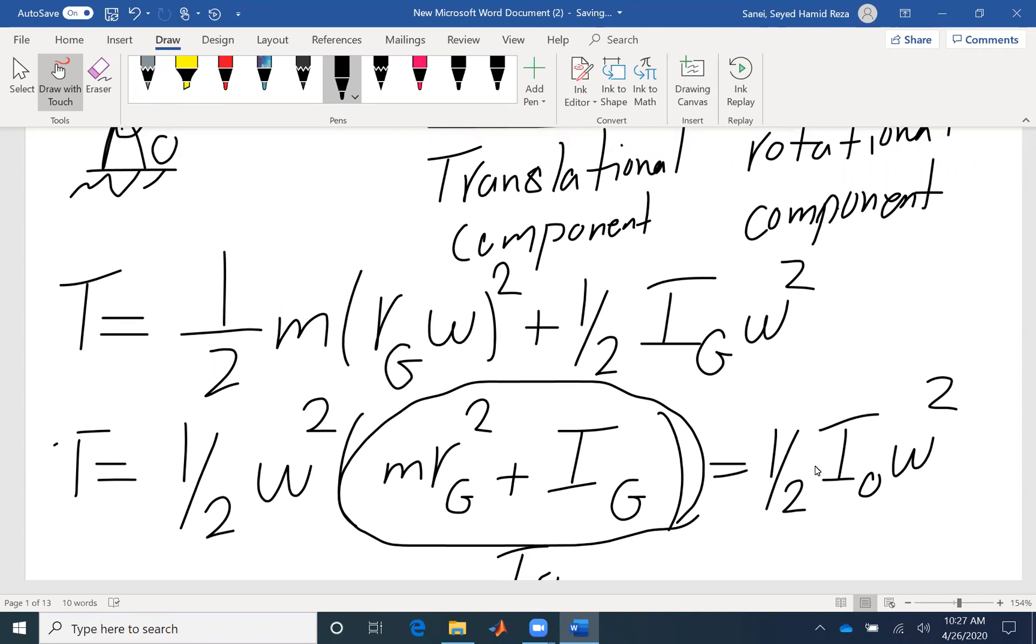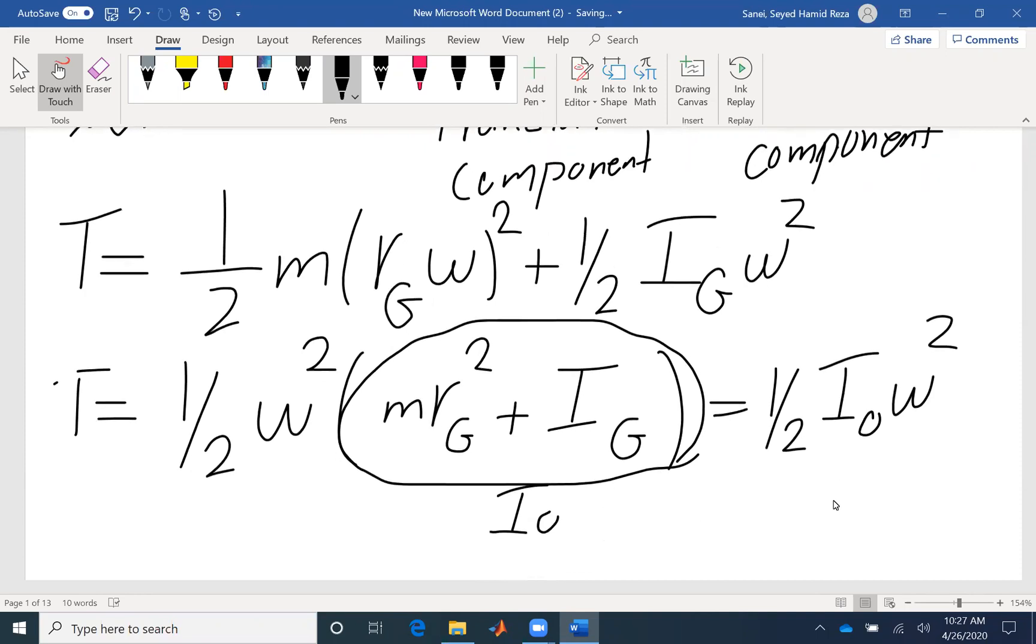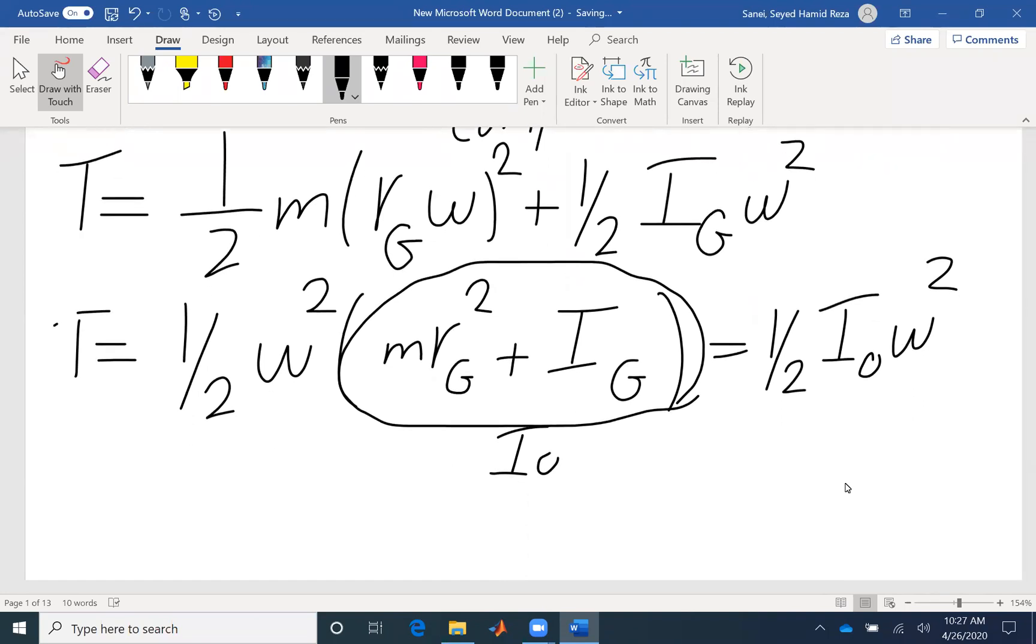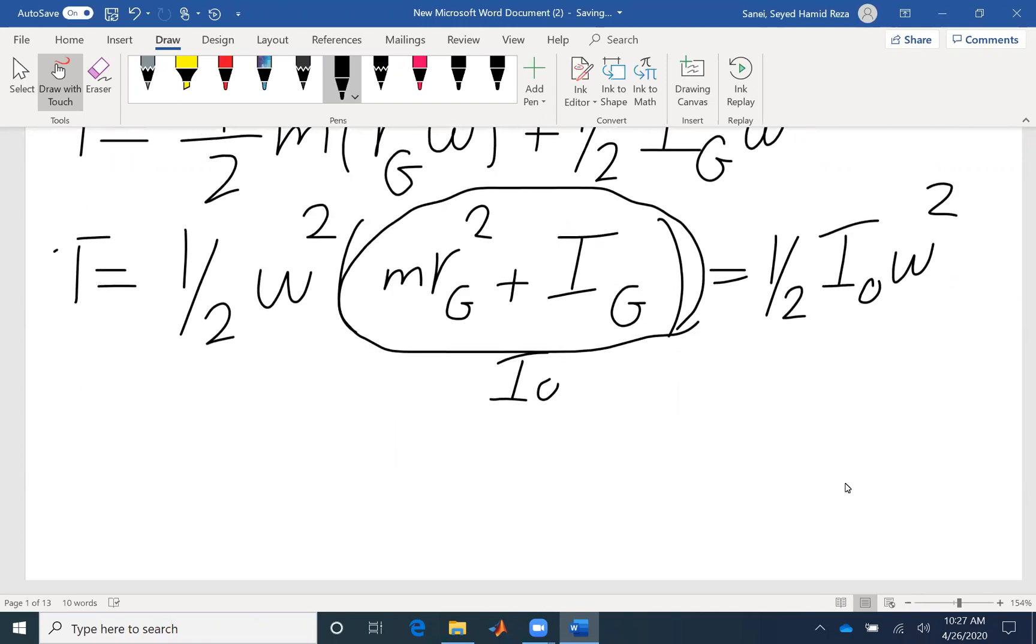But if it is about a fixed point, a point of rotation, as the name suggests, is a fixed point, so it does not have any velocity. So you have two options when you're writing kinetic energy of a rigid body.